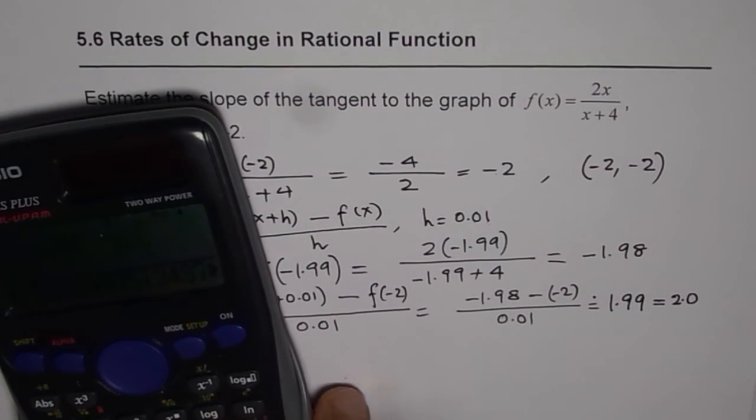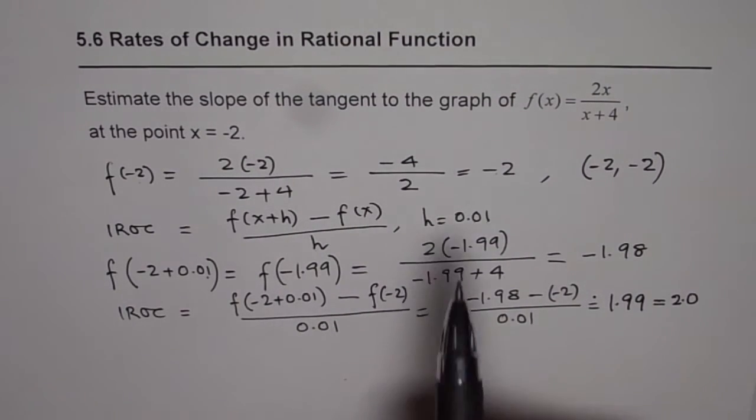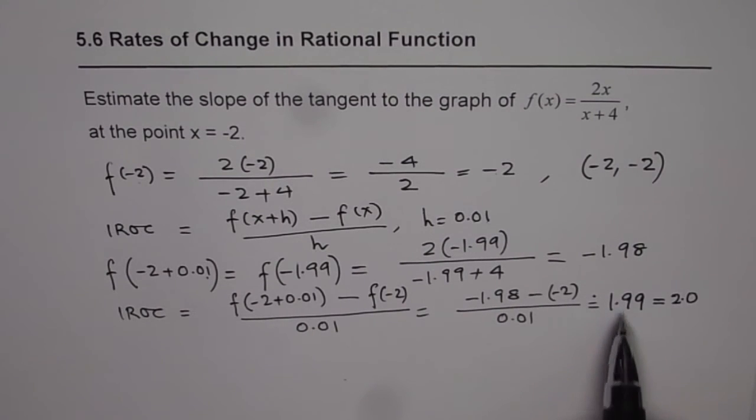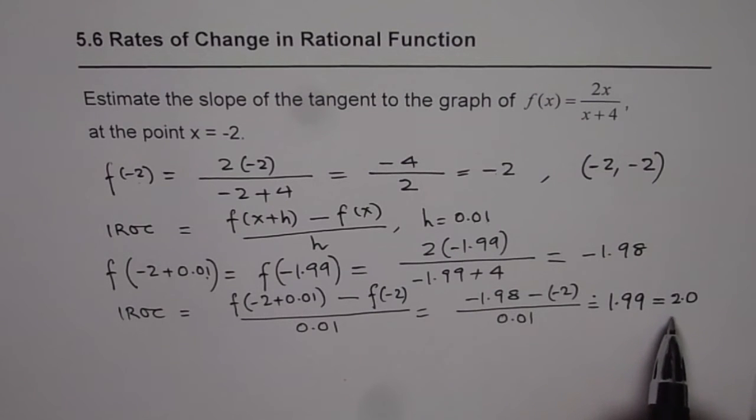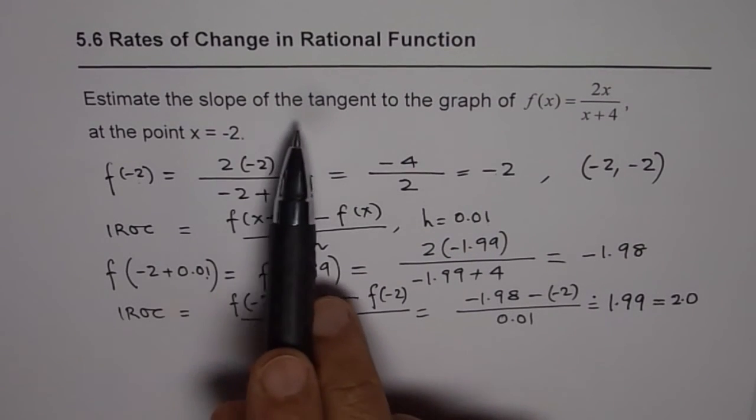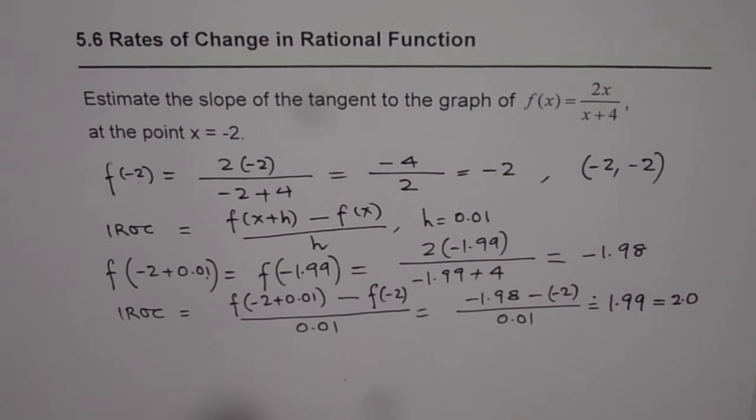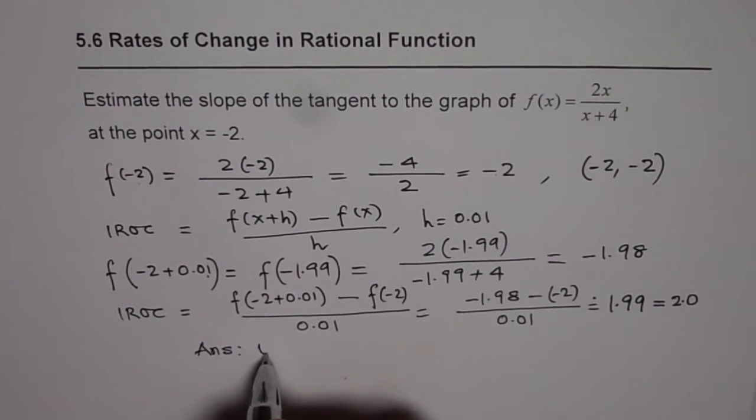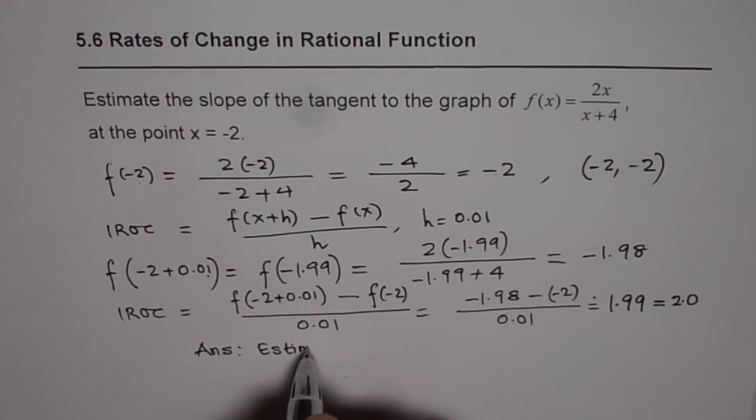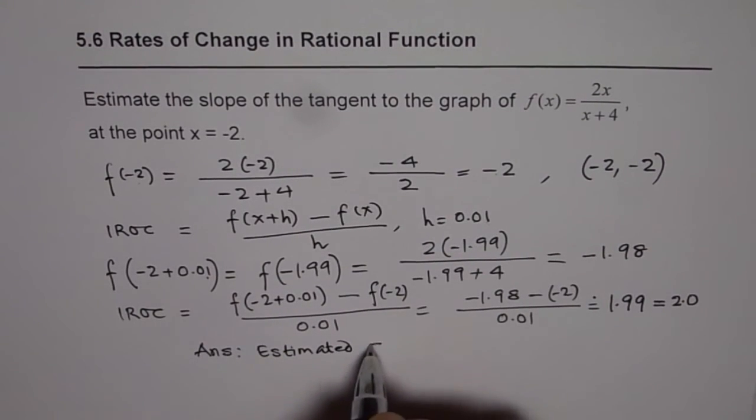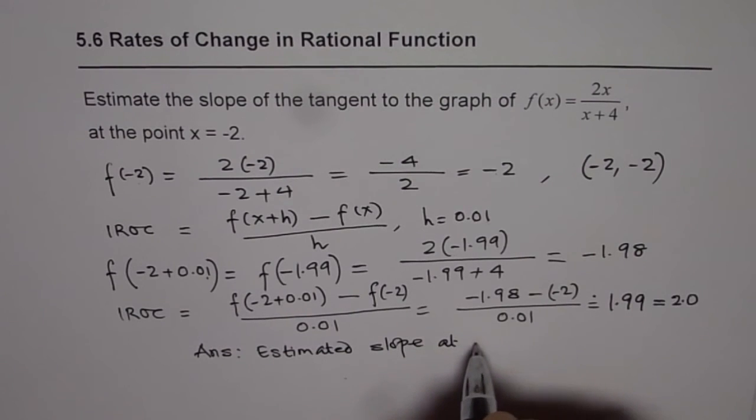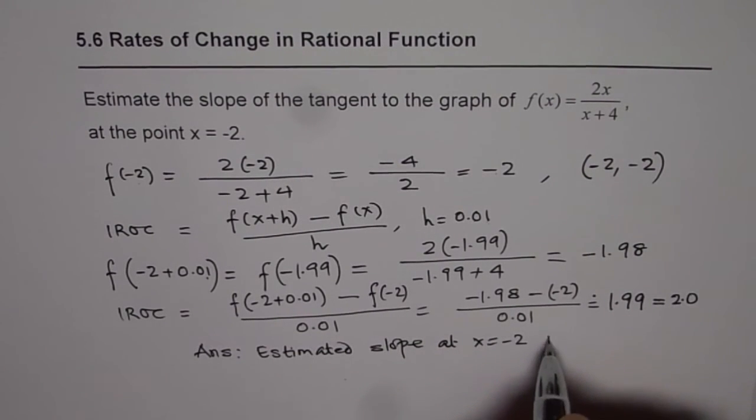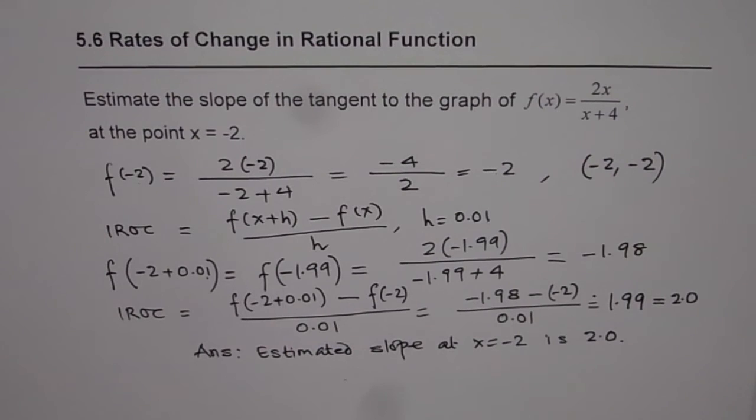So as you can see, the answer actually is accurate to two decimal places. The exact value is 2.0. Whenever we are talking about slope of a tangent on a graph, we are always estimating the slope. So in this case, our answer is estimated slope at x = -2 is 2.0. So that is how we can solve such questions.